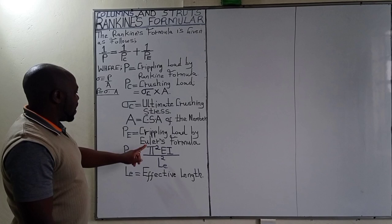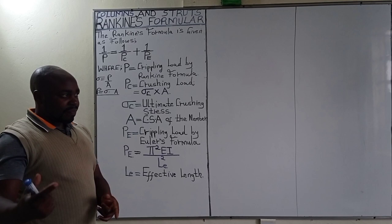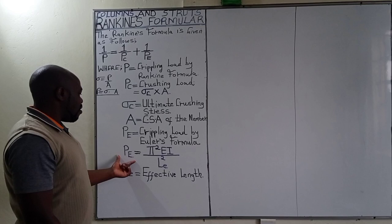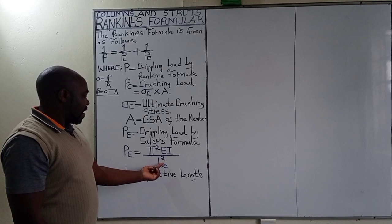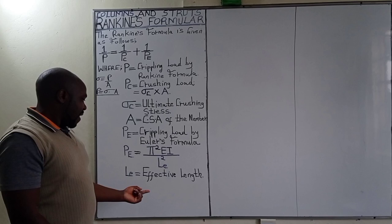Pe is the crippling load by Euler's formula. We have already covered problems dealing with Euler's formula and those videos are on our channel. The Euler's crippling load is given by pi squared EI divided by LE squared, where E is Young's modulus of elasticity, I is the moment of inertia, and LE is the effective length.